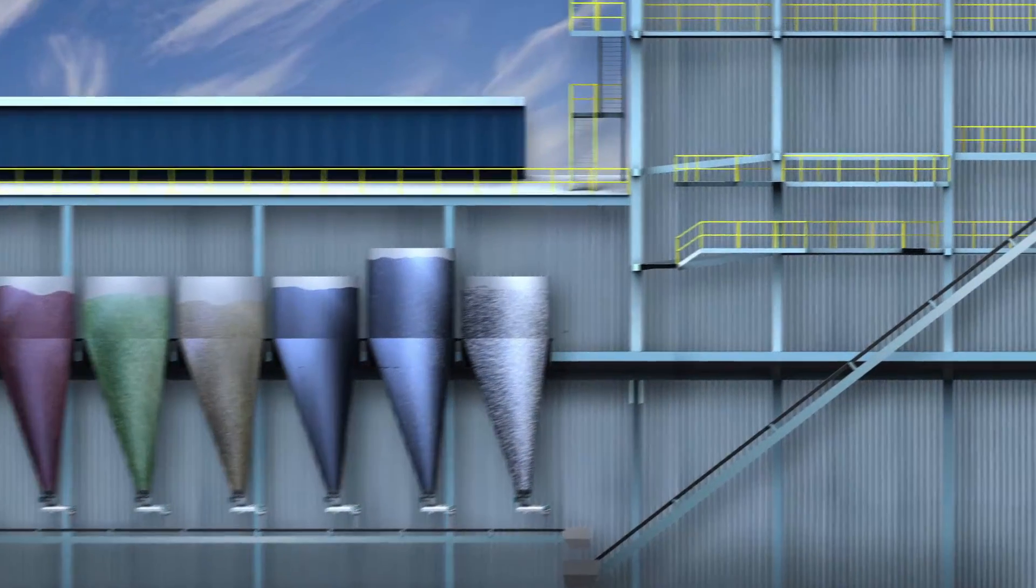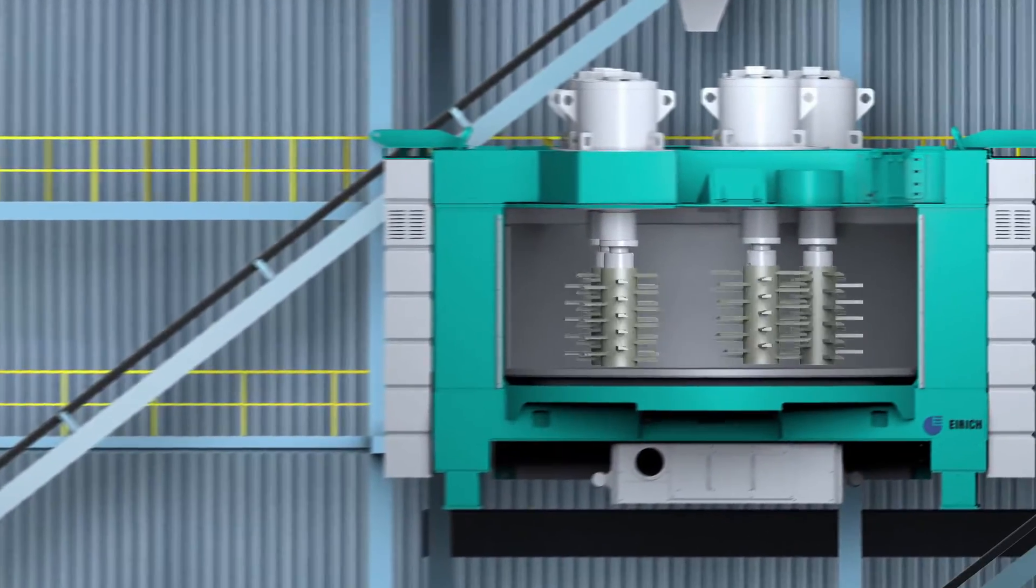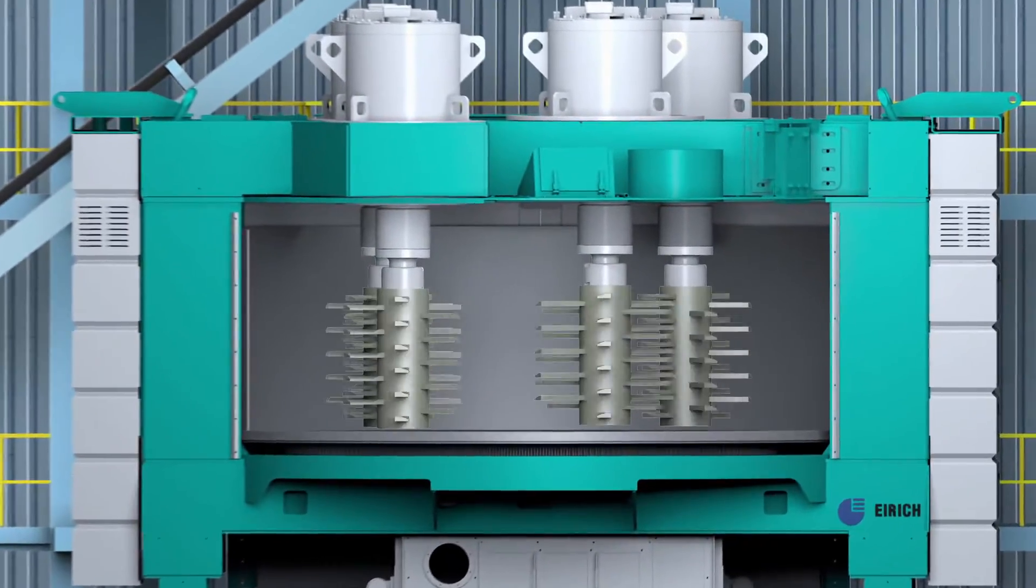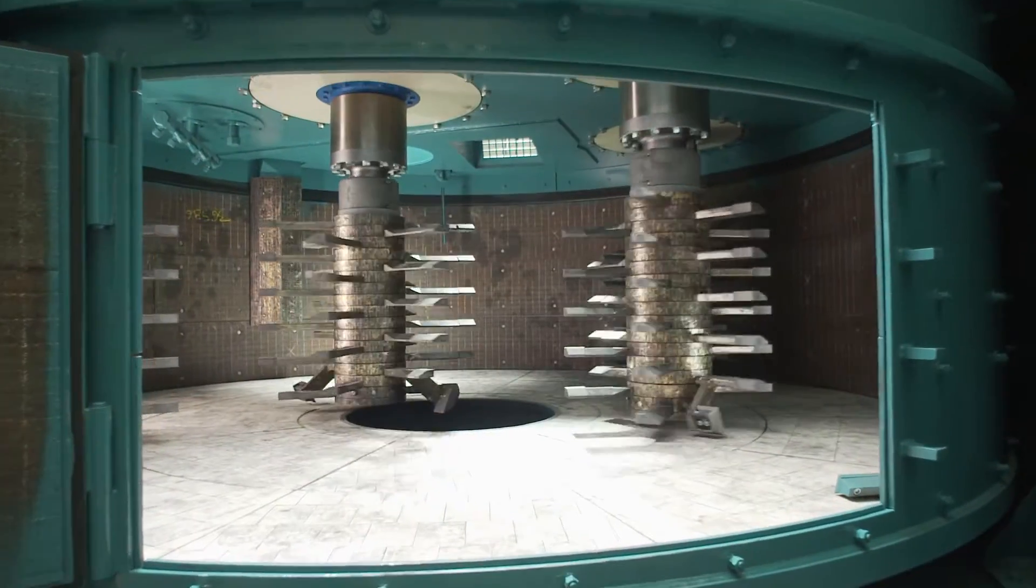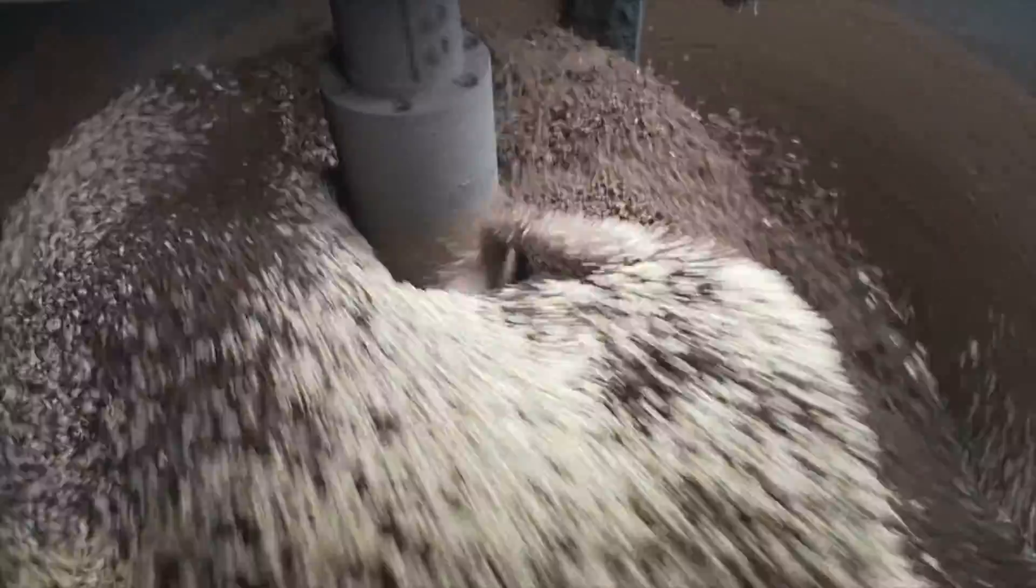The raw materials extracted from the dosing bins are transferred to the Intensive Mixer where thorough homogenization takes place. Thanks to the special design features of the Intensive Mixer, a faster and far higher homogeneity of the material mix is achieved than is possible using conventional mixing drums.